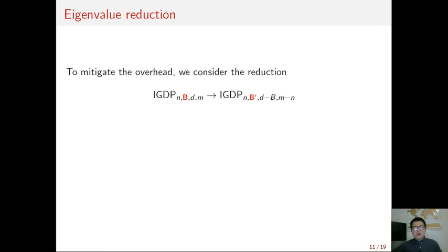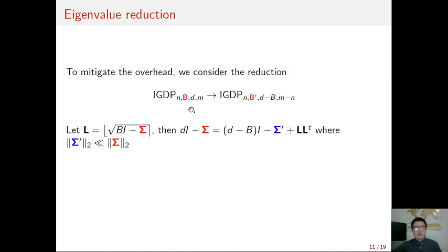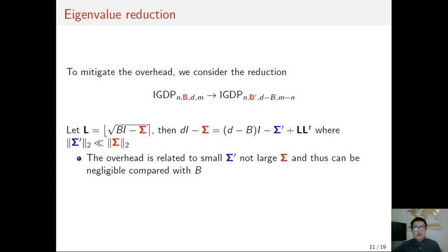To overcome this issue, we also consider another reduction called eigenvalue reduction. This reduction allows us to reduce the IGDP instance for large matrix to the one for small matrix. To build it, our idea is simple. We pre-compute some more approximate square root of matrix D times sigma. Then to decompose the matrix D times sigma, we only need to decompose the matrix D prime times sigma prime. The spectral norm of sigma prime is much less than the spectral norm of sigma. Note that the overhead is only related to the small matrix sigma prime, so it can be negligible compared with the original parameter B. This leads to a negligible overhead on the final Gaussian width.